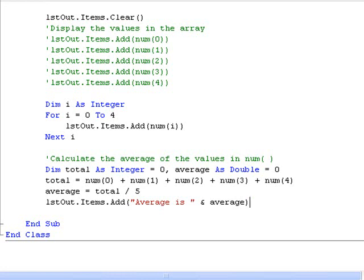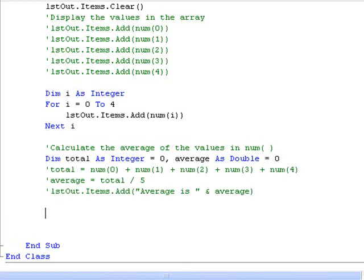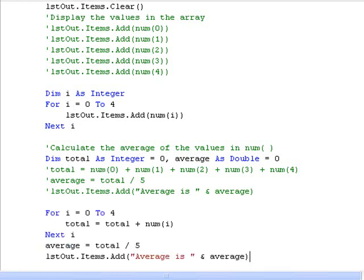Once again though, we could use a loop to achieve the same result. Let's have a look at the code for this loop. In this case then we are going to use a loop to calculate the total rather than calculating it on a single line as we did above. We loop through the values of the index going from 0 to 4, and each time we add the value in the element with that index to our total. On the first run through the loop we add num(0) and next we add num(1) and so on. And finally we calculate the average as before by dividing by 5.